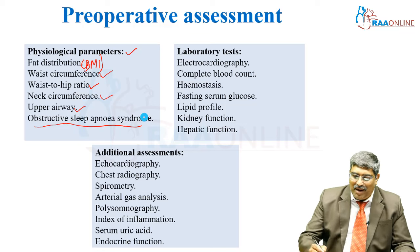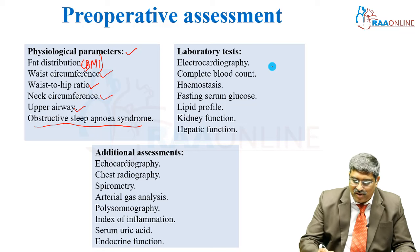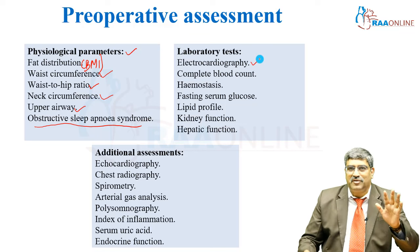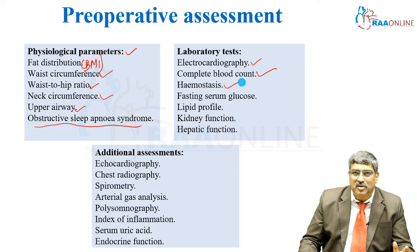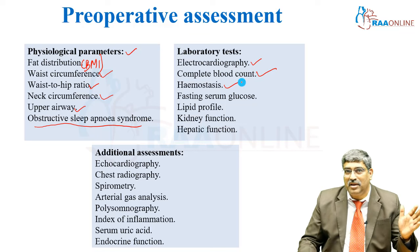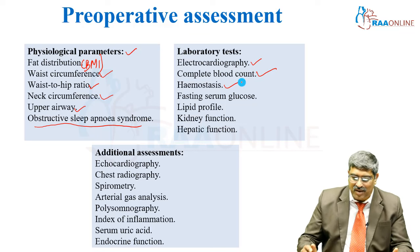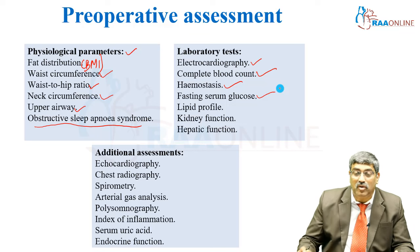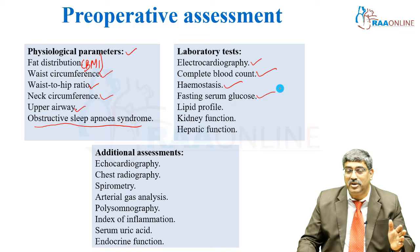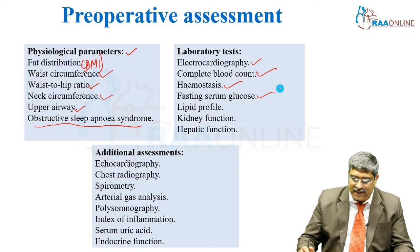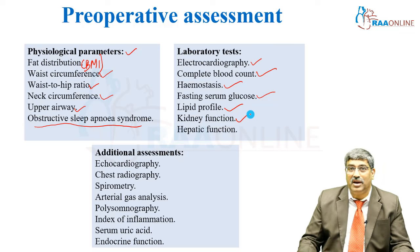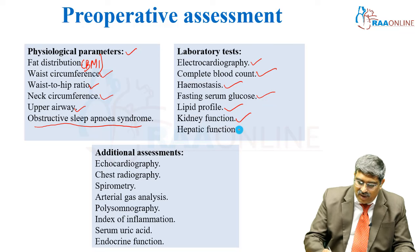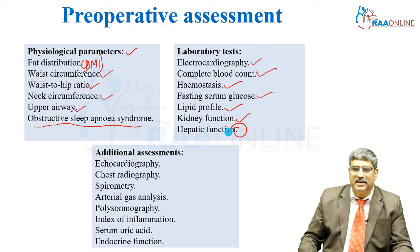The lab tests to perform include an ECG for cardiac status, complete blood count, hemostasis, clotting time, bleeding time and other coagulation parameters, serum glucose — particularly HbA1c to assess diabetic status — lipid profile which will be grossly altered, kidney function tests including blood urea, nitrogen and creatinine, and liver function tests.